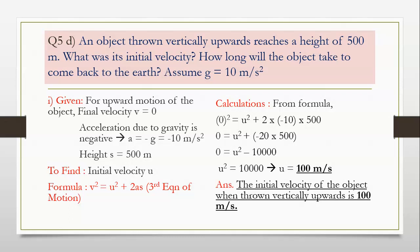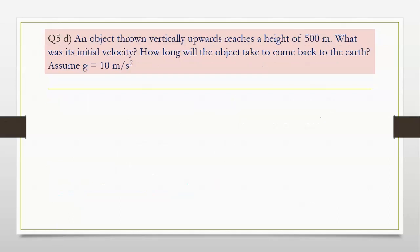Now we move to part 2 of the same sum. Again, we write the given. The second question — please read carefully: how long will the object take to come back to earth? In the first case the object was thrown vertically upwards; now the object is coming downwards. So the given will change with respect to acceleration due to gravity.